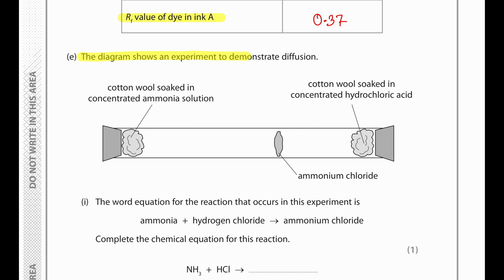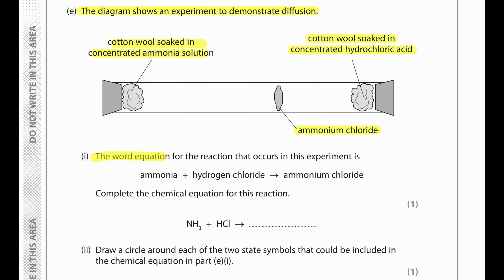The diagram shows an experiment to demonstrate diffusion. Cotton wool soaked in concentrated ammonia solution is on one side; on the other side we have cotton wool soaked in concentrated hydrochloric acid solution. In between, ammonium chloride has formed. The word equation is: ammonia plus hydrogen chloride produces ammonium chloride.